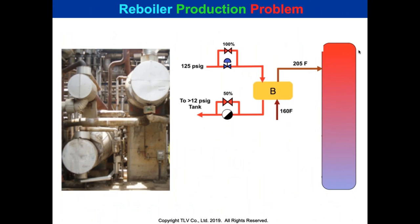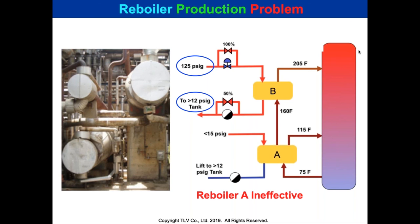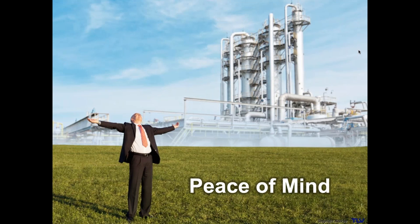Sometimes in steam balance work people don't look at the overall system. Example: Reboiler B had 125 psi steam going to a tank around 15 psi — working fine. But Reboiler A used low-pressure steam less than 15 psi going to that same tank — it couldn't flow. Before doing a steam balance, look at the overall process. Using low-pressure steam going into a tank at equal or higher pressure won't flow. Please talk to us whenever you have these systems — it's a free service, and we want you to have peace of mind.